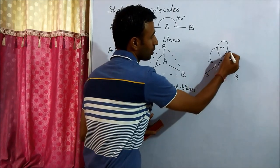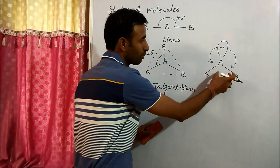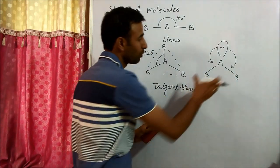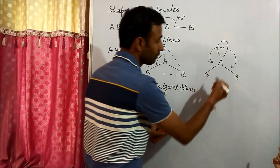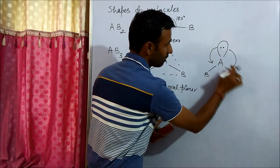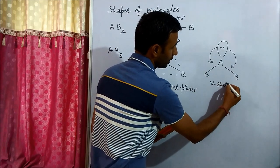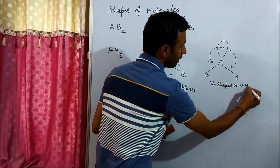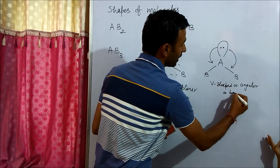First thing, because lone pair bond pair repulsion is greater than bond pair bond pair repulsion, therefore bond angle is less than 120 degrees. At the same time shape is decided by bond pairs. So it is V-shaped or we say angular or bent.